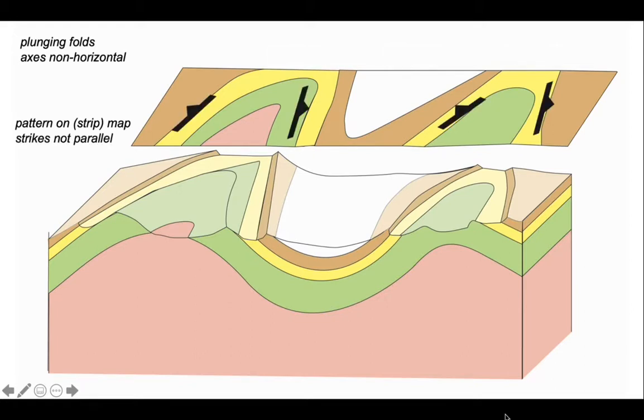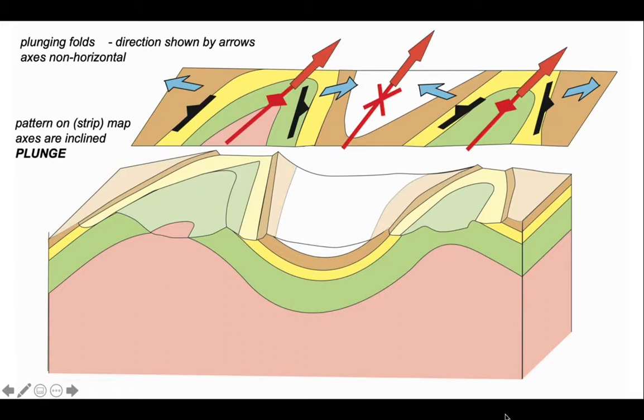Let's analyse them again with their dips. This time you'll see that the strike symbols across either of those antiforms in there are not parallel, but they point towards each other, they try and converge, in this case towards the top of the image. The strikes are not parallel. The younging directions, they still go away from the core of the folds, down the dip directions as we're showing in here. And we can draw on the fold axes like this, and those big arrows are in the direction that the fold axes plunge or incline down into the subsurface. So this is plunge.